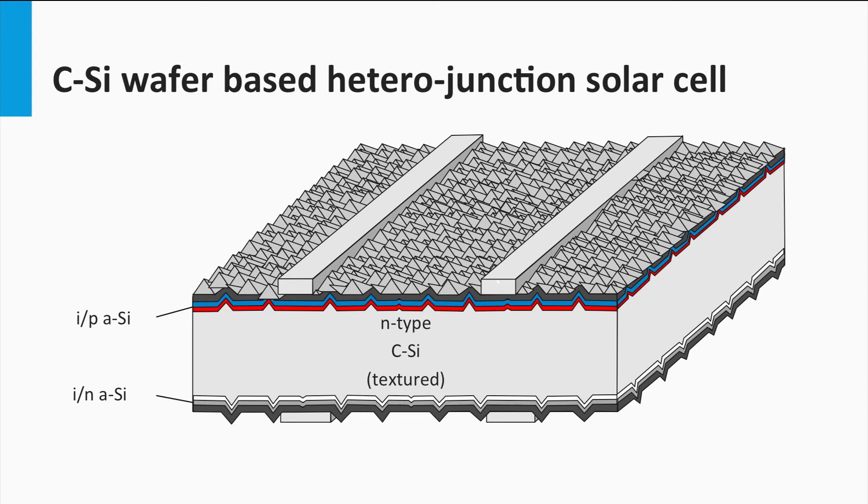The junction at the front side is formed using a thin layer of only 5 nm of intrinsic amorphous silicon, which is indicated by the red color. A thin layer of P-doped amorphous silicon is deposited on top and here is indicated with the blue color. The heterojunction forces the holes to drift to the P-layer.